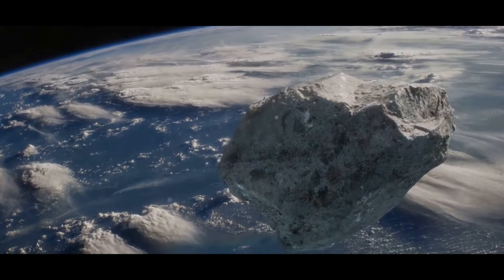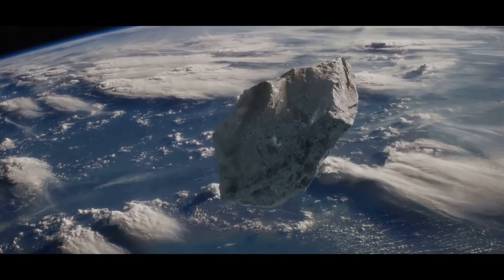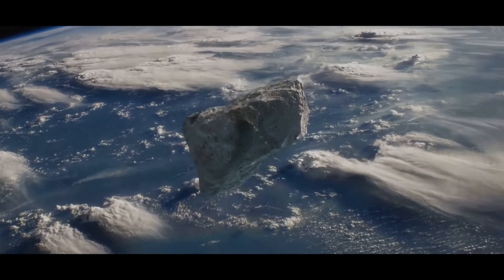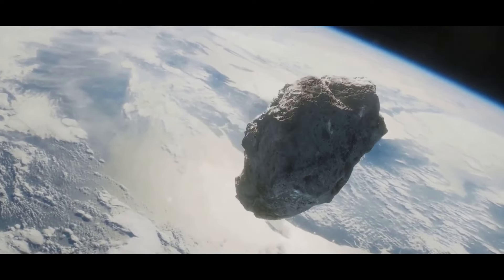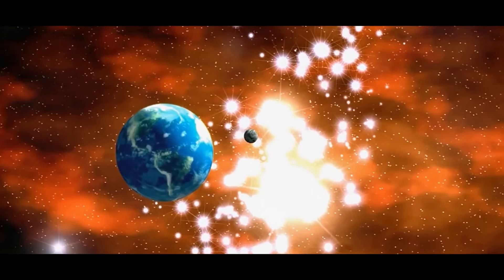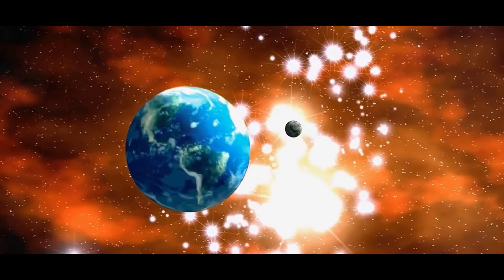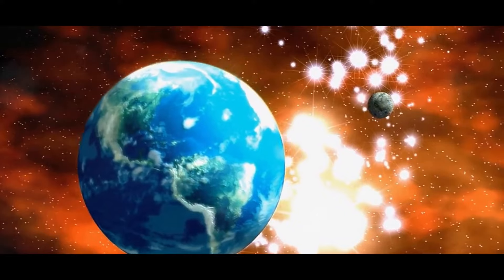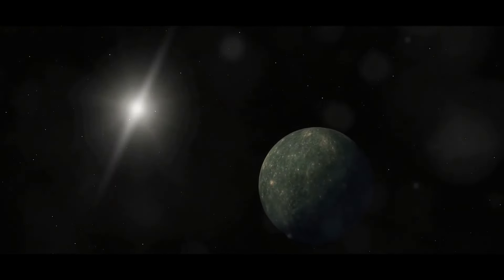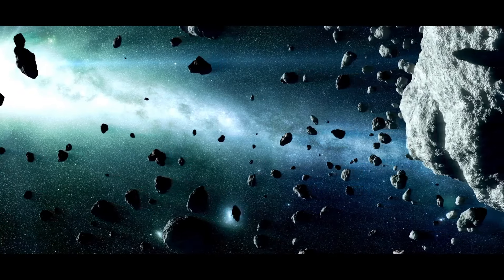The thought of a rogue planet entering our solar system or colliding with Earth is a chilling one. Such an event, while highly unlikely, could have catastrophic implications. The gravitational disruptions could send other planets, including Earth, into perilous new orbits or precipitate devastating impacts. These wandering worlds drift silently, capable of chaos yet unseen.